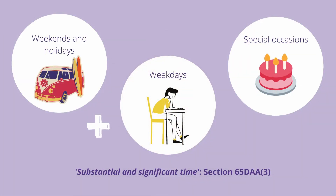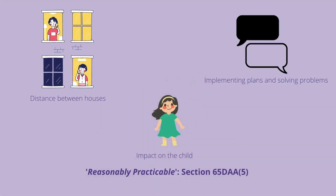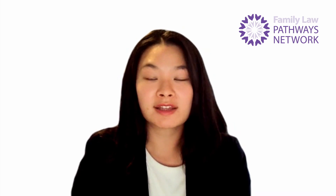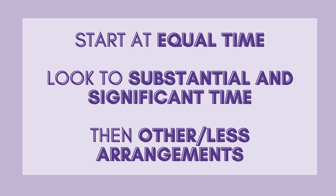Per section 65DAA subsection 3, substantial and significant time means that the parent should have the opportunity to be involved in the child's daily routine as well as special occasions like birthdays and holidays. The court will look at a number of factors to decide whether equal time or substantial and significant time is reasonably practicable. These include how far apart the parents live from each other, the parent's current and future ability to implement an arrangement for equal time or substantial and significant time, and their ability to resolve any difficulties. For example, one parent may work long hours or shift work which may impact the ability to have equal time. Further considerations include the impact the arrangement would have on the child as well as any other matters the court considers relevant. If the court finds that neither equal time nor substantial and significant time is appropriate, they may order that one parent spends less time with the child — for example, a few hours a week or on one weekend a fortnight.